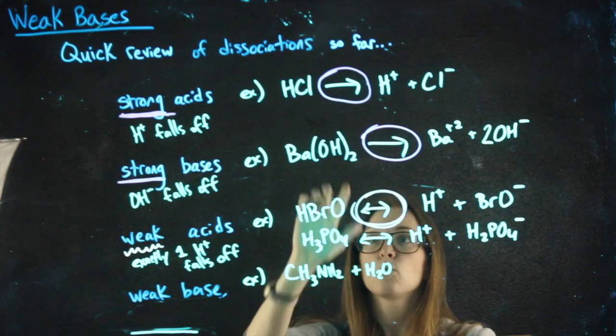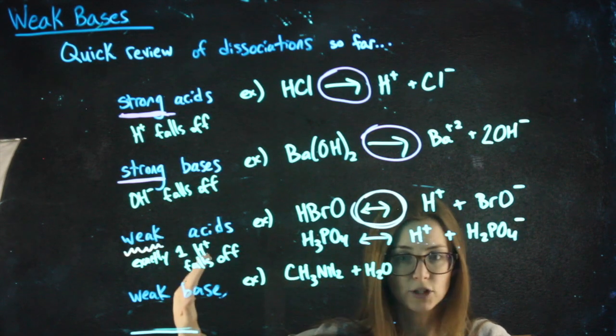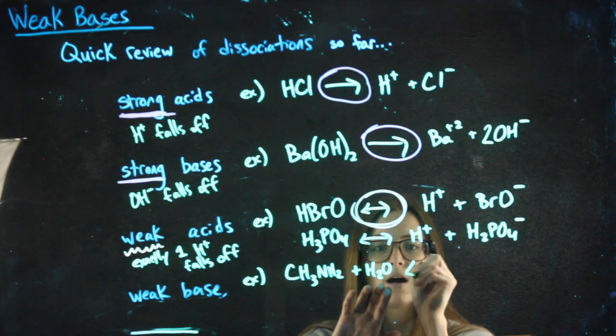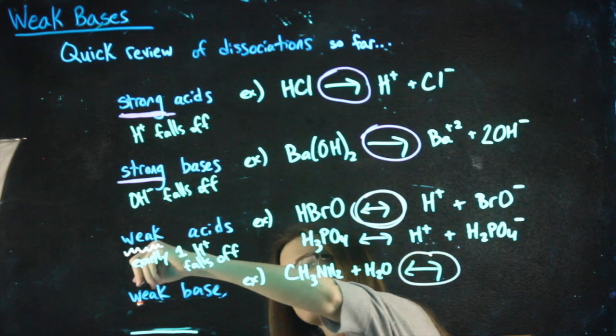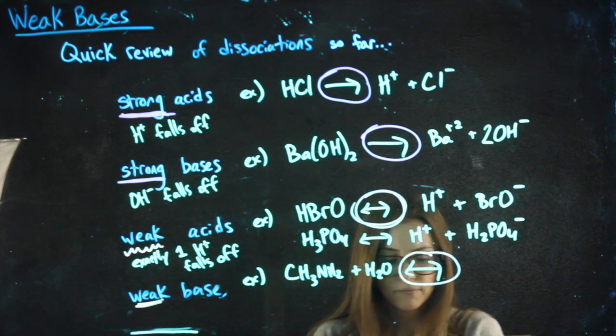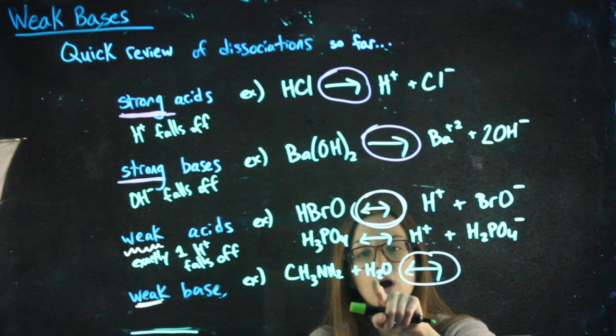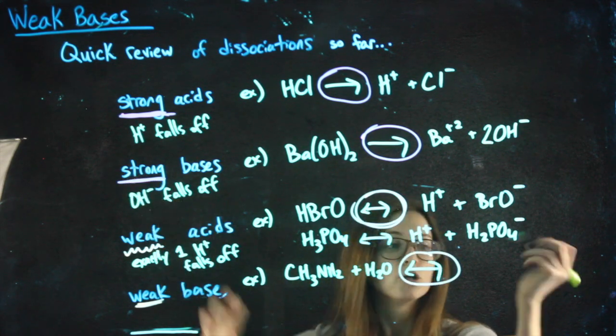Now, we haven't added water in any of the other types, and we're not going to add water in any of the other types. But the reason we add water here, we'll use equilibrium arrows again because we're talking about something weak.